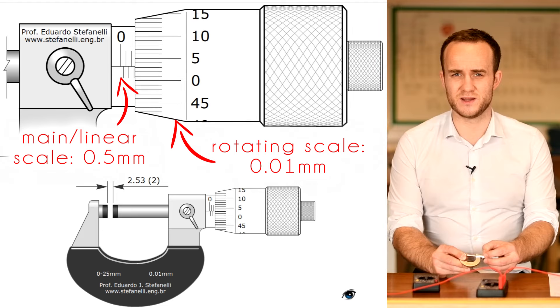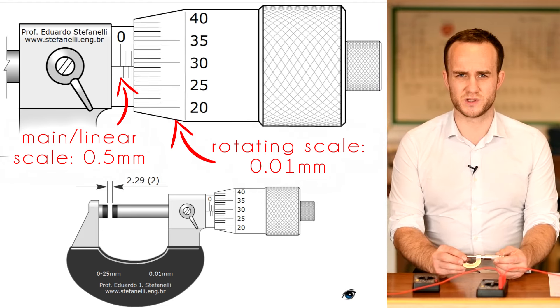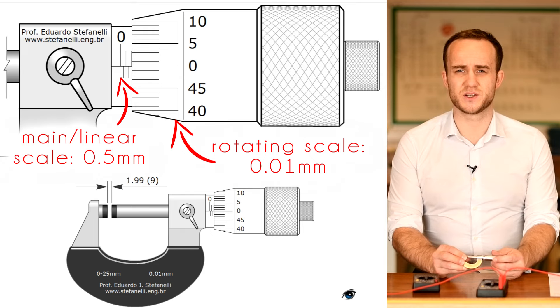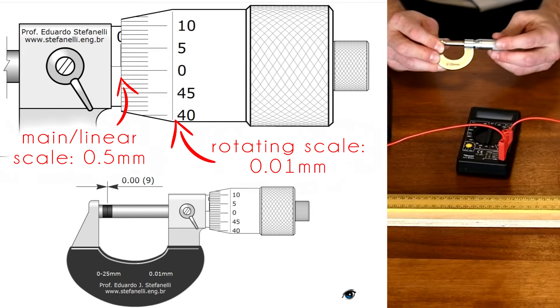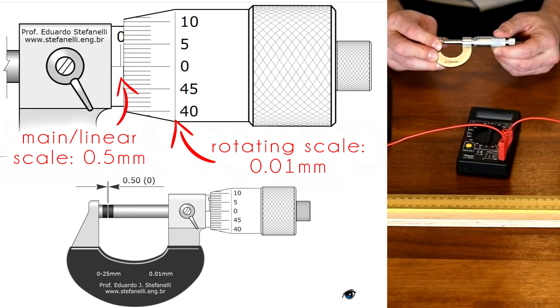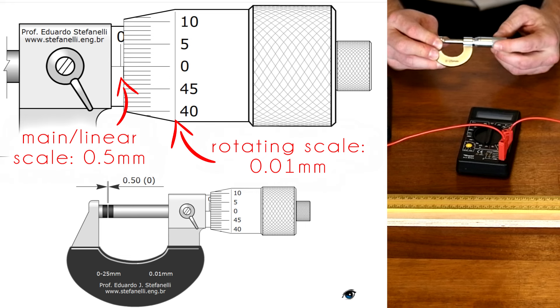And then the little scale gives us hundredths of millimeters, so this 50 for every turn. So that means that if I go through one complete turn I've gone through 50, and that takes me to 0.5 millimeters, and so every full turn with this micrometer is half a millimeter.